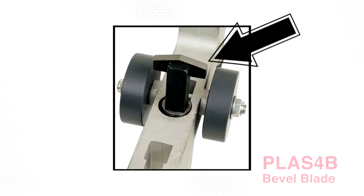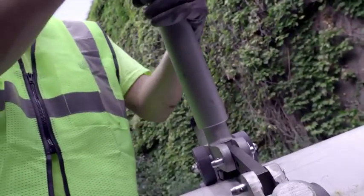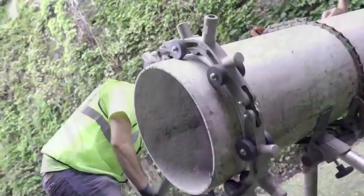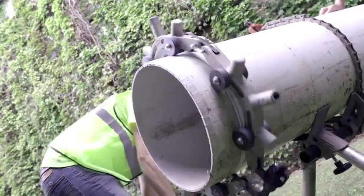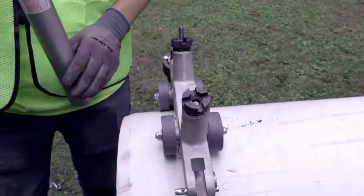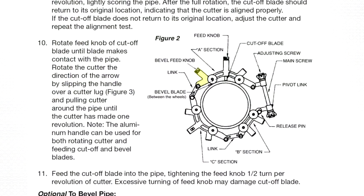Once the cutoff blade is halfway through the pipe, the operator can begin beveling the pipe. The bevel blade puts a 15 degree bevel on both sides of the cut. Place the handle onto the bevel tool knob and rotate until the tool touches the pipe. Rotate the cutter one revolution around the pipe. The bevel feed knob should be rotated only a quarter turn per one revolution of the cutter.